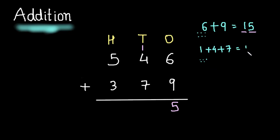So, the total is 12. Now, here, 2 is at 1s place. So, we will put here 2. And this 1 will be carried over here at 100s place.